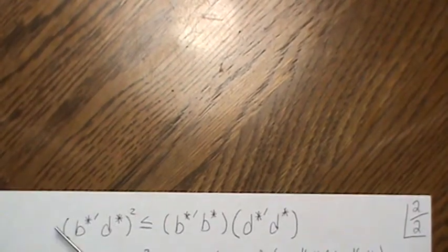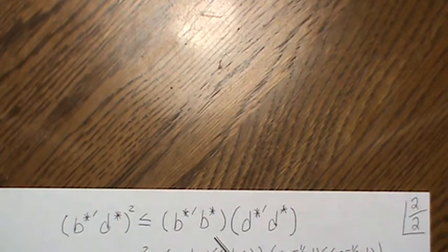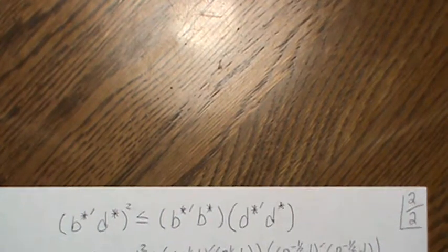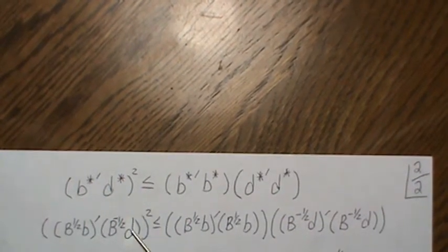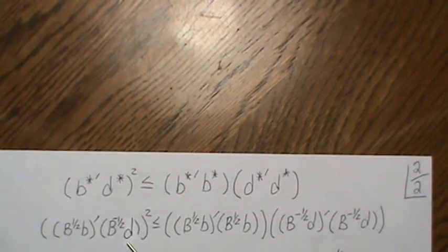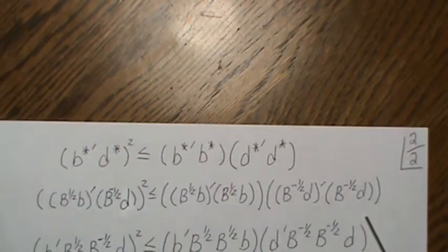Now, we put B star and D star into the Cauchy-Schwarz inequality, and now we unfold what we just did. So B star is this, and D star is this, and the similar substitution here.